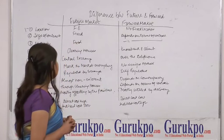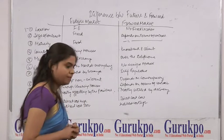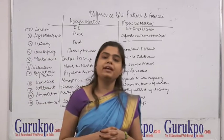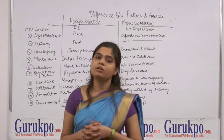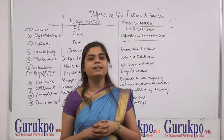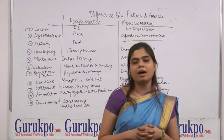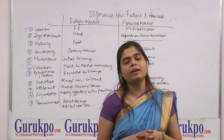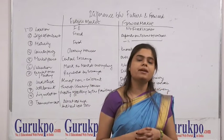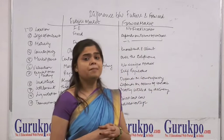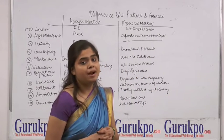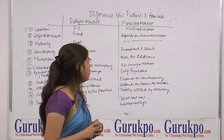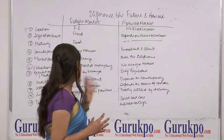The third difference is maturity. There is a fixed or specific date of contract maturity in the case of the futures market. In the forward market, the maturity date totally depends on the parties or the terms of the contract.